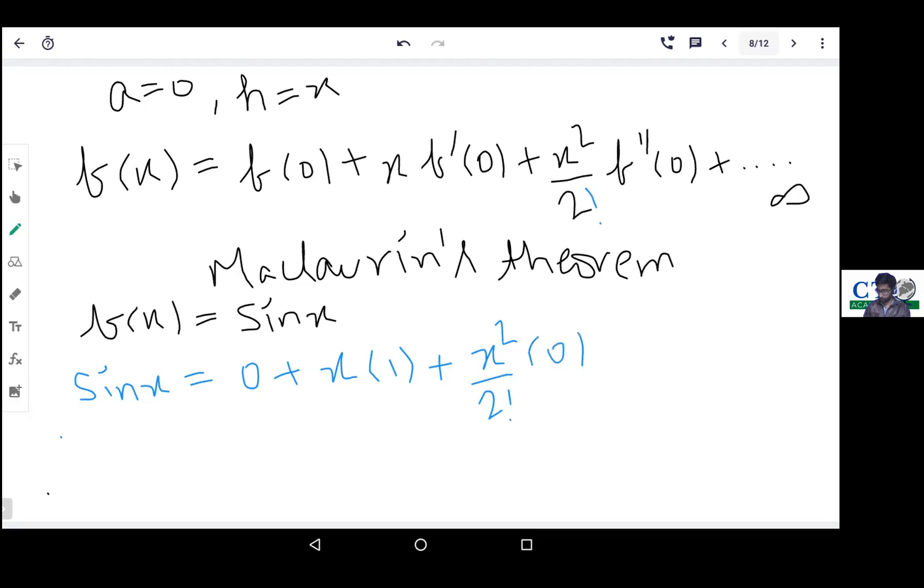So that's how it will come as minus x cube upon 3 factorial times 1. Putting all these values this way, sin(x) expansion will go to infinity - this important formula.